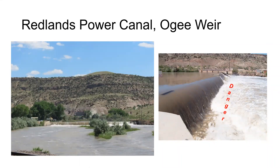In the Grand Valley, we have a lot of weirs, which in some cases could be considered low-head dams or any structure that spans the channel. This is the diversion up in the Redlands Power Canal — an old weir on the Gunnison River before it comes into the Colorado River here in town. These weirs can be very dangerous because they create hydraulic conditions downstream that can trap boaters and swimmers — essentially a roller that can keep you from being able to swim out.